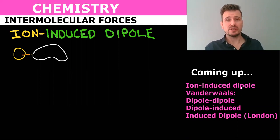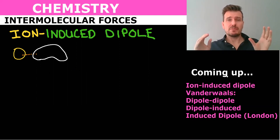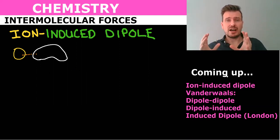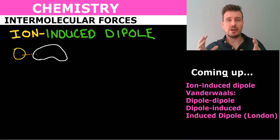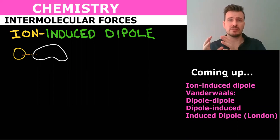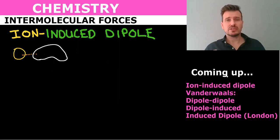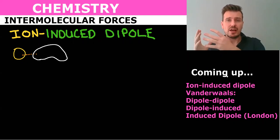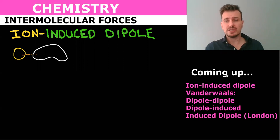Last time what we did was ion-dipole forces, where the positive or negative ion was attracted to the positive or negative pole of a polar molecule. So if it was a negative ion it was attracted to the positive side of the polar molecule. Now we're going to look at ions and how they might induce a pole in an otherwise non-polar molecule.